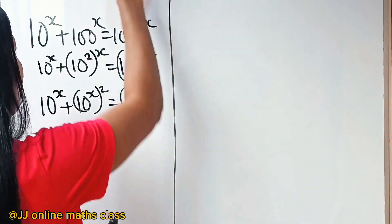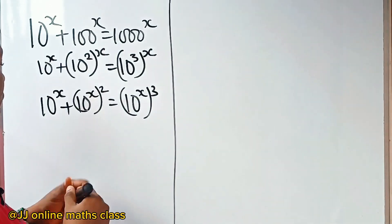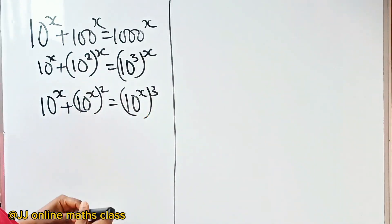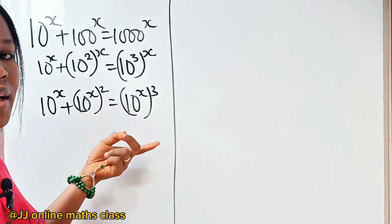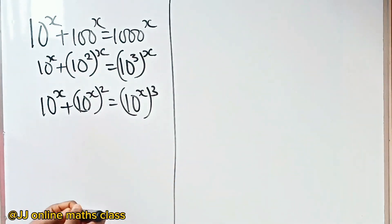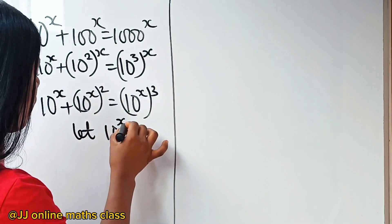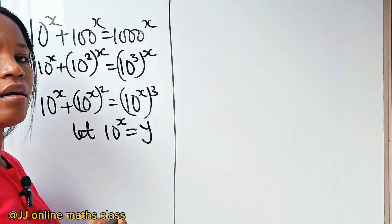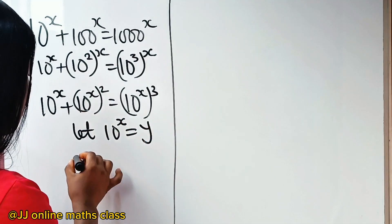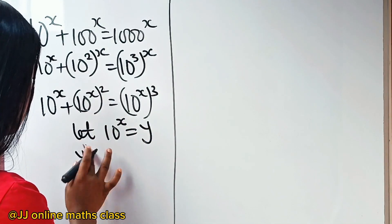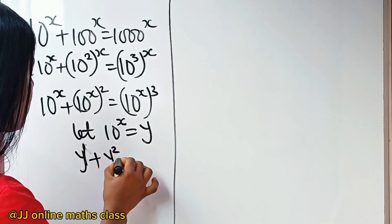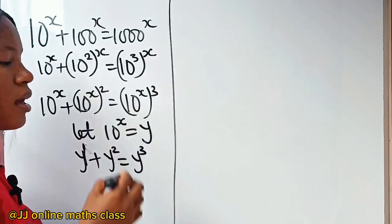Now we have 10 to the power of x appearing in each term. To simplify the equation and make it less ambiguous, let's let 10 to the power of x equal y. That means we can rewrite this equation as y plus y squared is equal to y cubed.